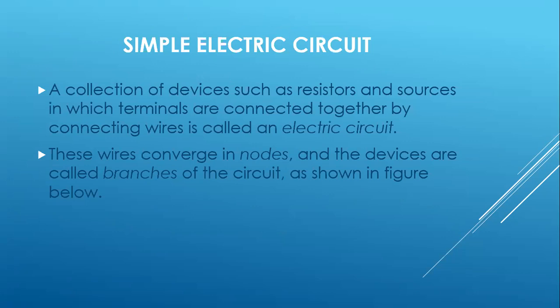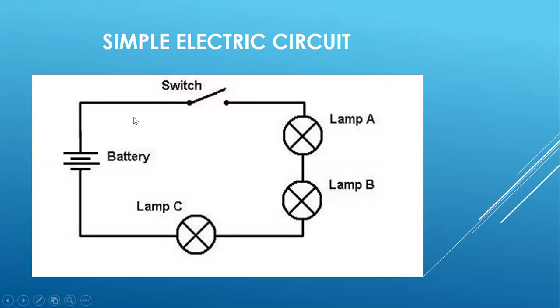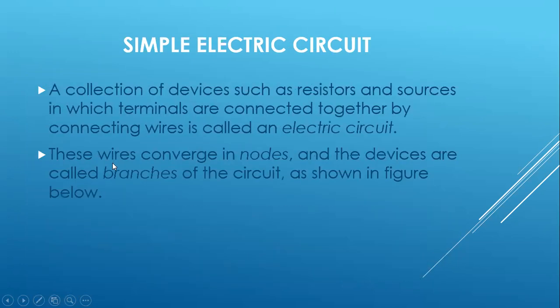Moving on, let's see the simple electric circuit. A collection of devices such as resistors, ammeters, voltmeters, and other sources, in which terminals are connected together by connecting wires, is what we call an electric circuit. The wires that connect all these terminals together converge in nodes, and the devices are called branches of the circuit, as shown in the figure. We can see the wires connecting the various terminals of the devices, including three lamps and a battery as the source.